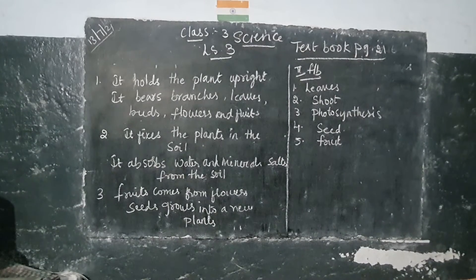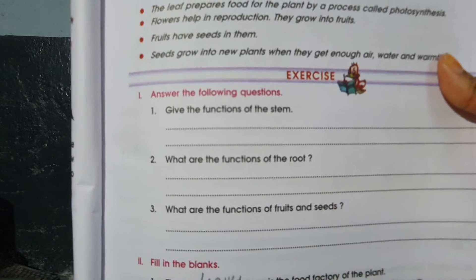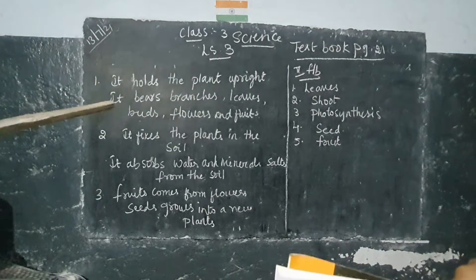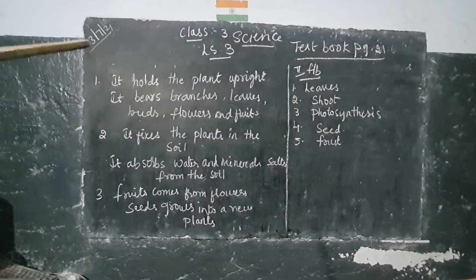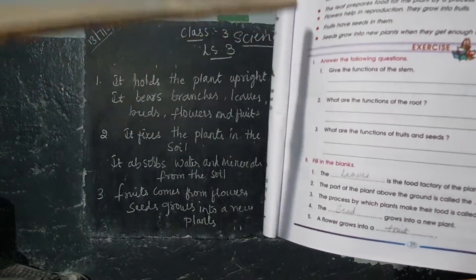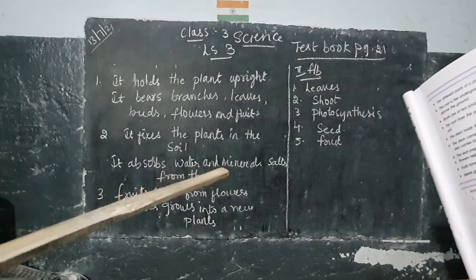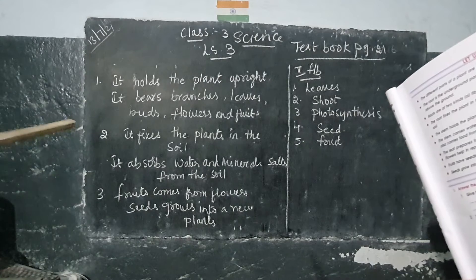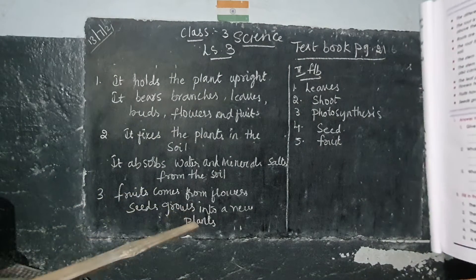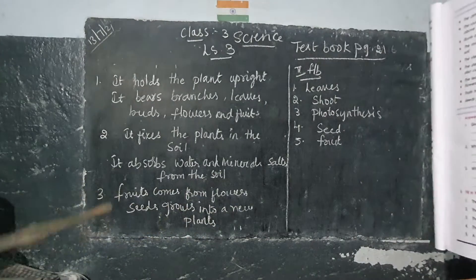Now take out page number 21. You can see the questions and answers — there are three questions in the exercise. The function of stem: it holds the plant upright and bears branches, leaves, flowers, and fruit. The function of root: it fixes the plant in the soil and absorbs water and mineral salts from the soil. The function of fruit and seeds: fruits come from flowers, and seeds grow into a new plant.